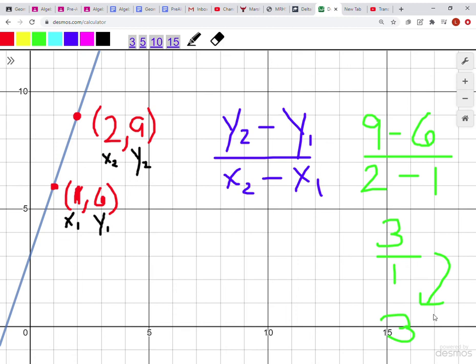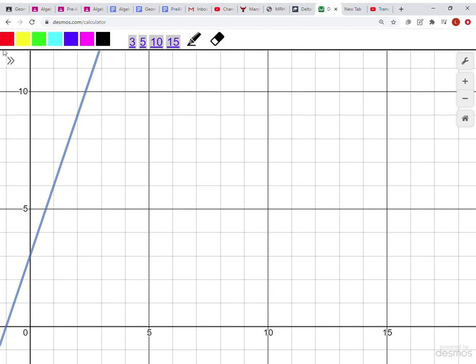Now I'm going to do a second example. I'm not going to take points from this line again because we'd get the same rate of change. I'm going to make up my own points. Let's pretend a line passes through (-3,5) and (4,9), and we want to find its rate of change.